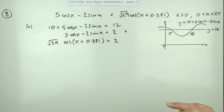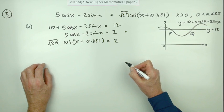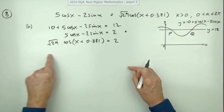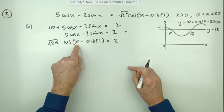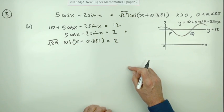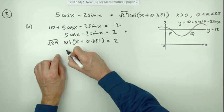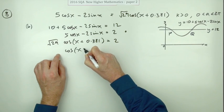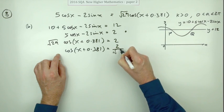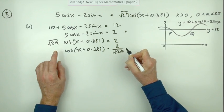Now that's just a simple linear style equation in that there's only one mention of x. So how can you get to x? Get rid of the root 29, get rid of the cos, and get rid of the 0.381.